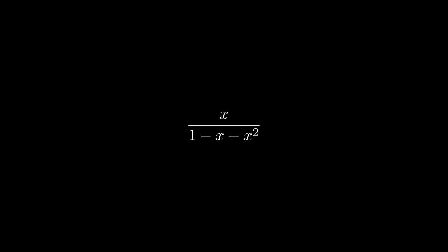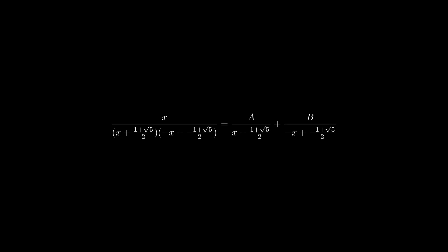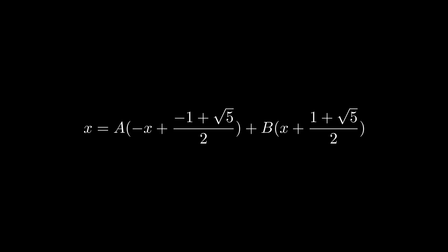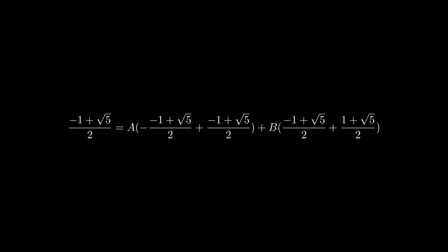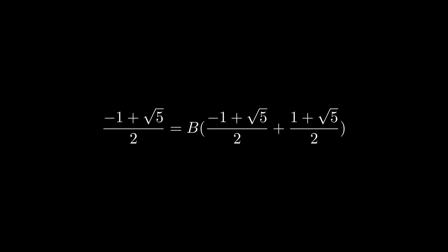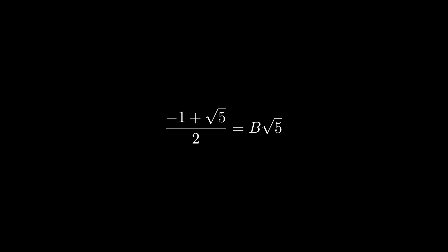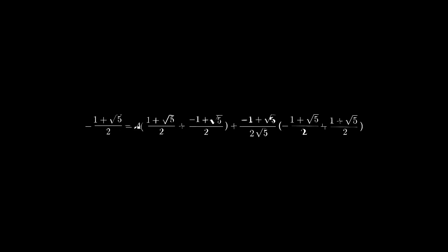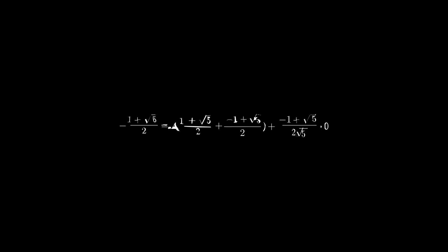Now let's deal with the remaining term on the right side using partial fraction decomposition again. The denominator is the same as the previous one, so it has the same factors. We set it equal to two unknown variables, a and b, and solve for the values that make the equality true. This time it is a bit more complicated because x is in the numerator of the left side, but it will be similar to before. We choose values for x that cancel one of the unknowns. After further simplifying, we find b, then solve for a using the same method. After a bit more simplifying, we know a and substitute everything back into the equation.